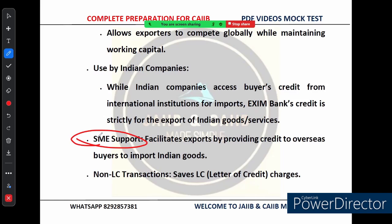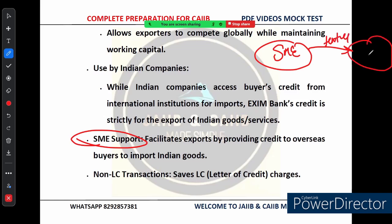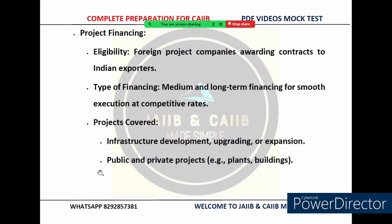For example, an Indian SME exporting textiles to Africa can rely on EXIM Bank's buyer's credit to ensure that overseas buyers get flexible payment terms, opening up opportunities for SMEs to expand beyond domestic borders. Another benefit is non-LC transactions — buyer's credit can help exporters save on LC charges. In some cases, with EXIM Bank's buyer's credit, exporters can work without an LC, which reduces transaction costs further.